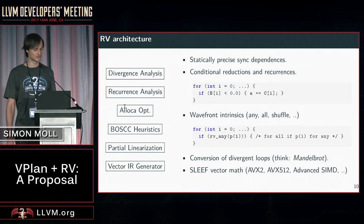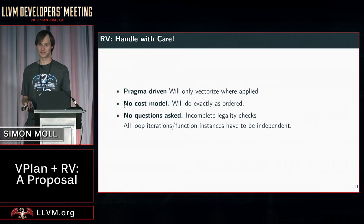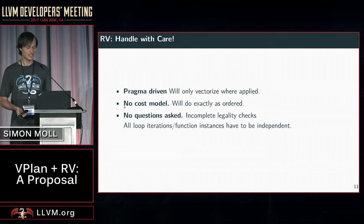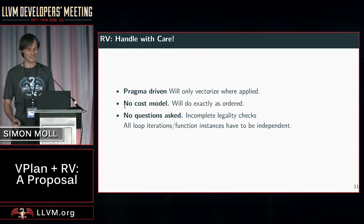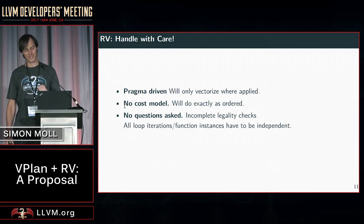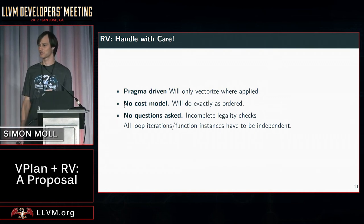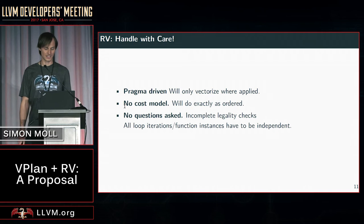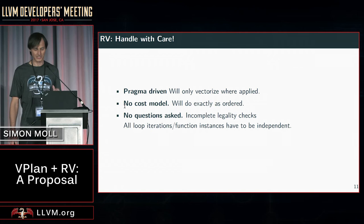RV sounds great, but where's the downside? The downside is basically that RV will just do what you tell it — vectorize something — without asking any questions, without optimizing, without any notion of cost. You put a pragma there or apply our binary executable, and it will vectorize that loop or function no matter what. Without a cost model, you have to tell it the width of everything. And it will not do thorough legality checking — it will just give you the vectorized code.